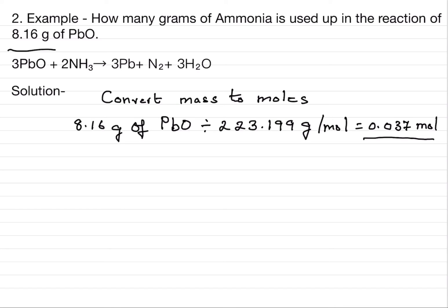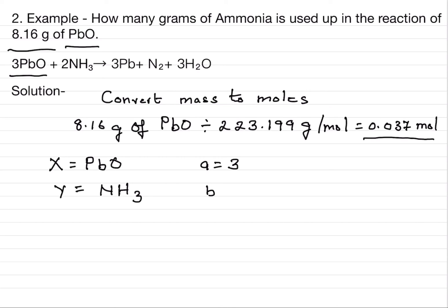Step three: identify X, Y, a, and b. Here X is PbO, and Y is NH₃, since we need to find how many grams of ammonia are used. The coefficient a of PbO is 3, and the coefficient b of NH₃ is 2. We have now identified X, Y, a, and b.